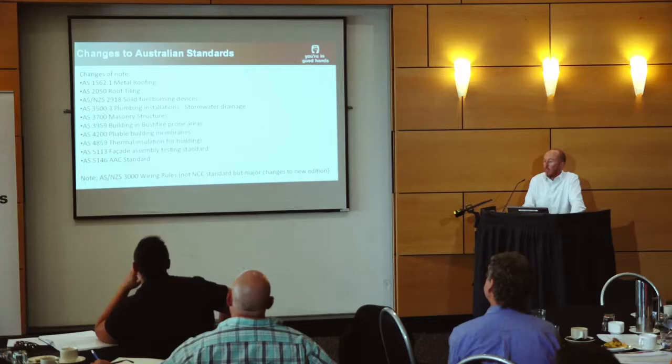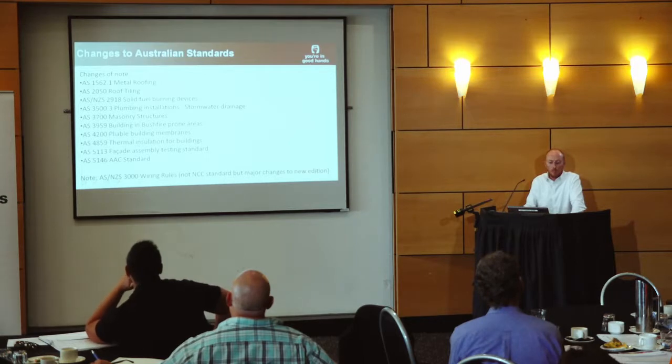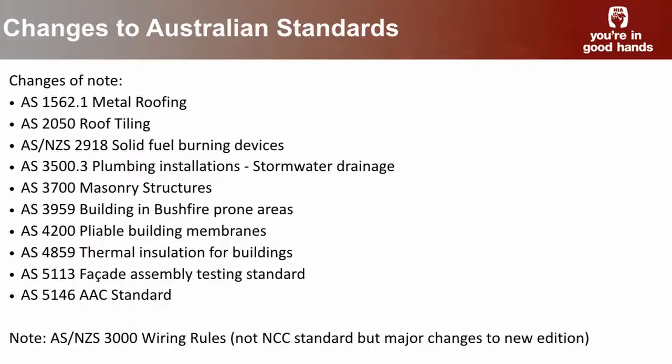The first one is AS 1562 Part 1, which is your metal roofing standard — I did touch on this when we went through the metal roofing provisions. AS 2050 is the roof tiling standard. AS/NZS 2918 is the solid fuel burning devices standard. Also the changes to the plumbing standards AS 3500 suite, AS 3700 the masonry structures standard, AS 3959 the building in bushfire prone areas standard, and for New South Wales also the changes to the planning for bushfire protection, which has additional provisions that apply concurrently to AS 3959.